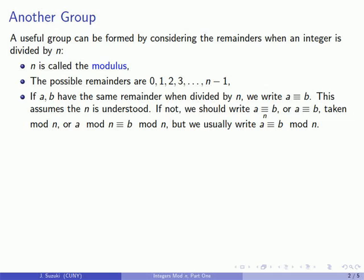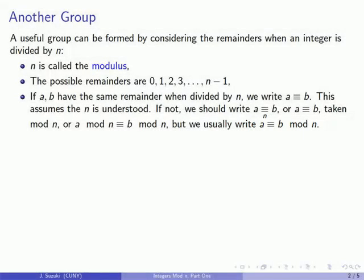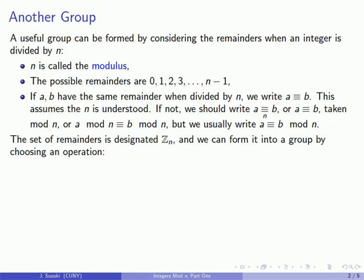But the most common way of writing this is to write a congruent to b mod n. The most important thing to notice about this notation is that the mod n applies to both sides of the congruent symbol. It does not apply just to b, it applies to the a as well. Now this set of remainders is designated Zn and if I want to form this into a group I have to choose an operation.